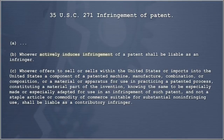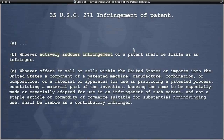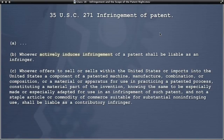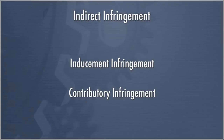Infringement of Patents is governed by Section 271, which establishes infringement. It says that whoever actively induces infringement shall be liable as an infringer, as well as somebody who contributes to the infringement of a patent can be liable as an infringer. Indirect infringement really consists of two types: inducement infringement and contributory infringement.